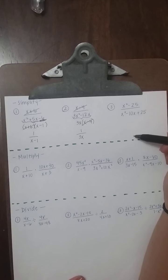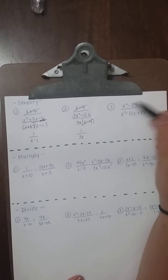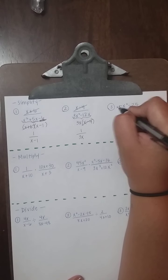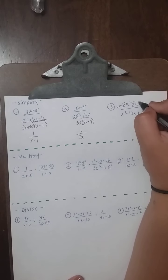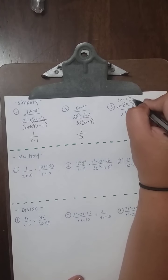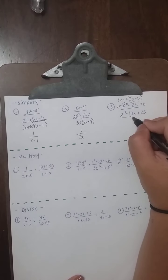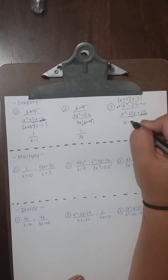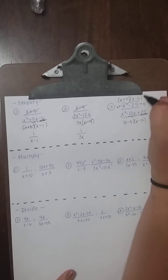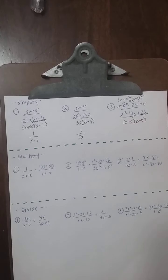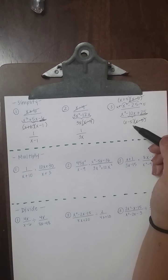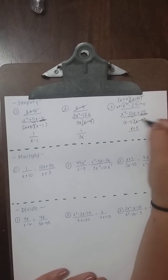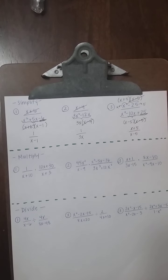For example 3: (x² − 25) on top. No GCF, not a trinomial, but it's a difference of perfect squares. x² − 25 factors to (x + 5)(x − 5). The bottom is a Plain Jane trinomial: multiply to 25, add to −10, giving (x − 5)(x − 5). One (x − 5) cancels, leaving (x + 5) over (x − 5).